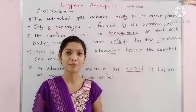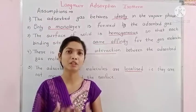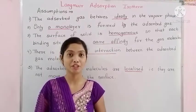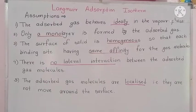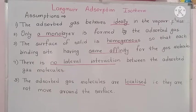He considered some assumptions. The first assumption is that the adsorbed gas behaves ideally in the vapor phase — the adsorbate should be ideal in nature. The second assumption is that only a monolayer is formed by the adsorbed gas; the adsorbed gas should form only a single layer, not multiple layers. Langmuir's assumptions do not allow bilayer or multilayer formation.